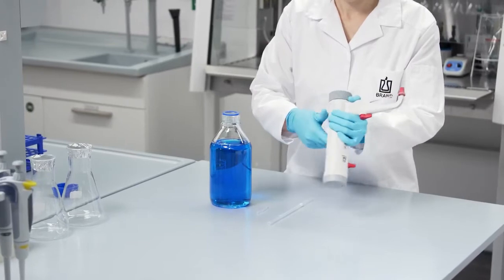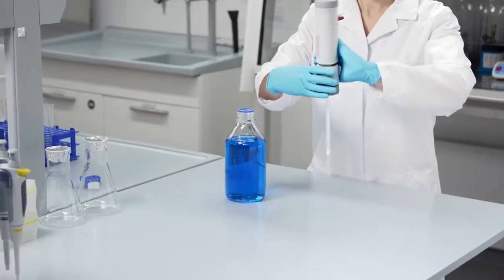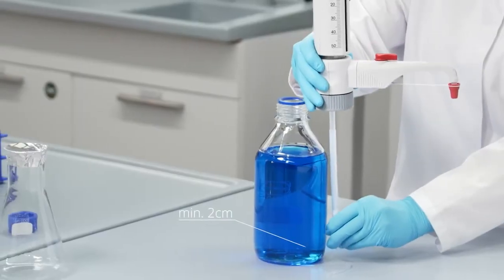Simply adjust the length of the filling tube to the bottle height and attach it. Keep a minimum distance of 2 cm from the bottom of the bottle and avoid aspiration of solids.